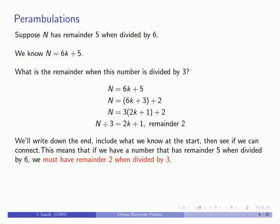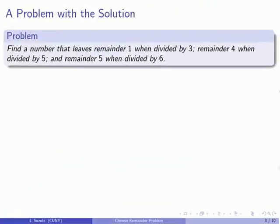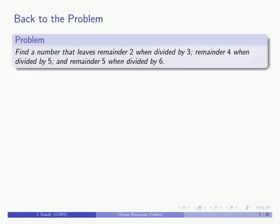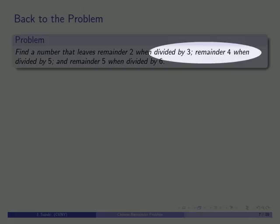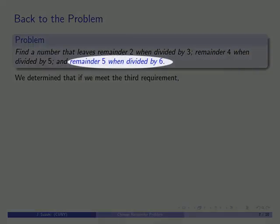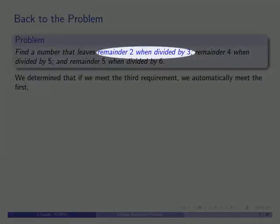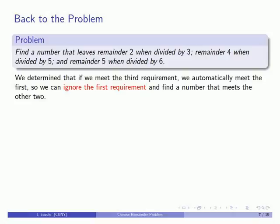This tells us two things. First, our original problem is unsolvable — we cannot have a number with remainder 1 when divided by 3, as well as remainder 5 when divided by 6. At the same time, this also says that if we had remainder 2 when divided by 3, then that problem would be solvable. So we'll change our problem so we have remainder 2 when divided by 3. If we meet the third requirement — remainder 5 when divided by 6 — we automatically satisfy remainder 2 when divided by 3. We don't actually need that first requirement; we'll ignore it. Now we have a Chinese remainder problem with only 2 divisors: 5 and 6.